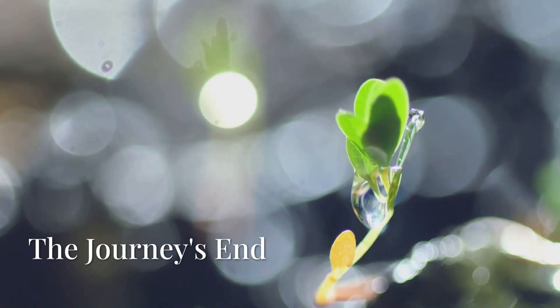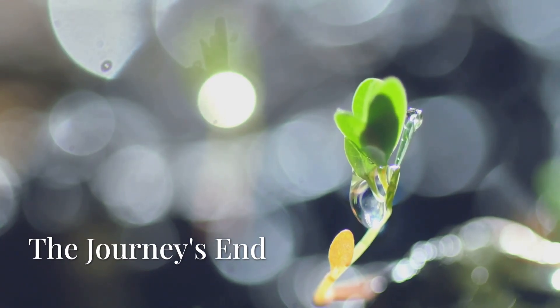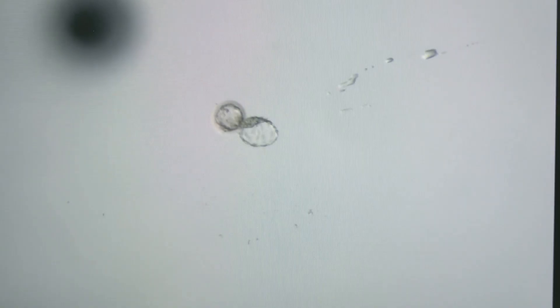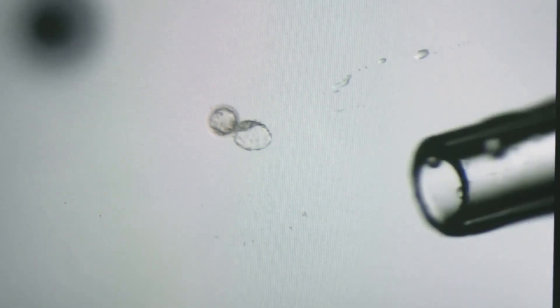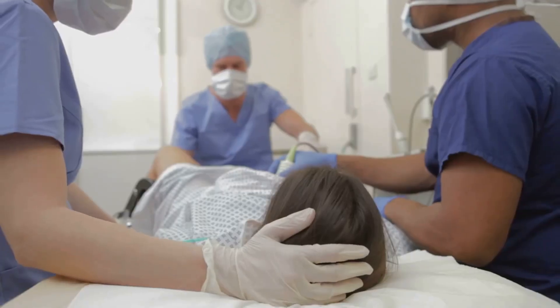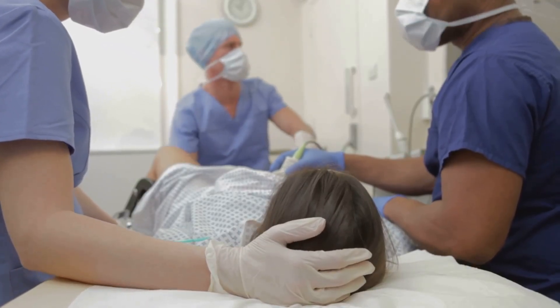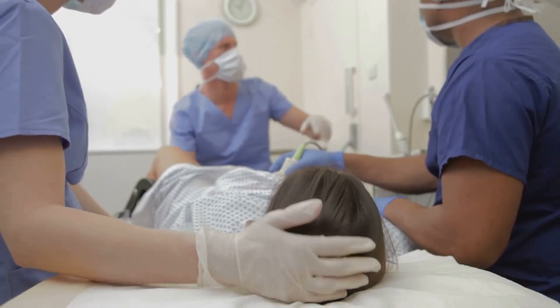The fertilized egg doesn't just stay put - it begins to divide, growing rapidly as it travels down the fallopian tube towards the uterus. Once it reaches the uterus, it implants itself in the uterine lining, ready to grow and develop over the next nine months.